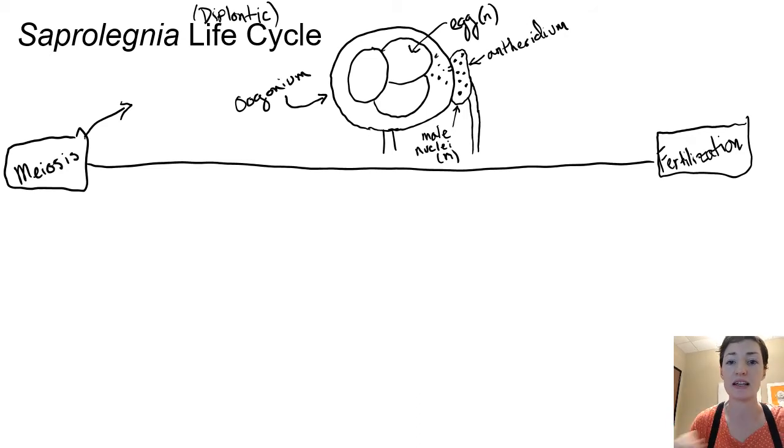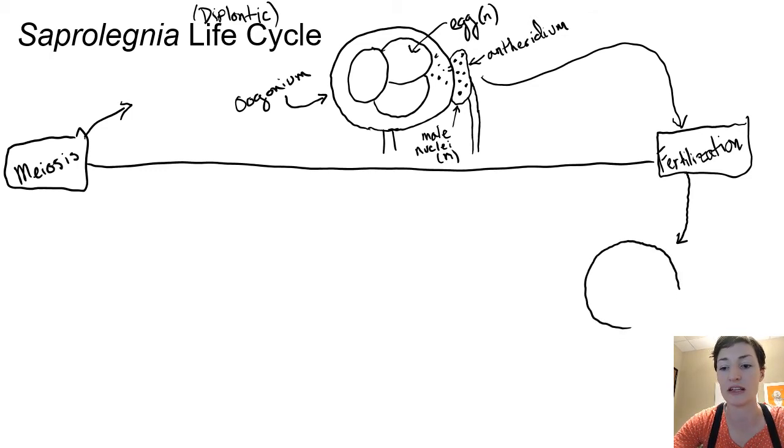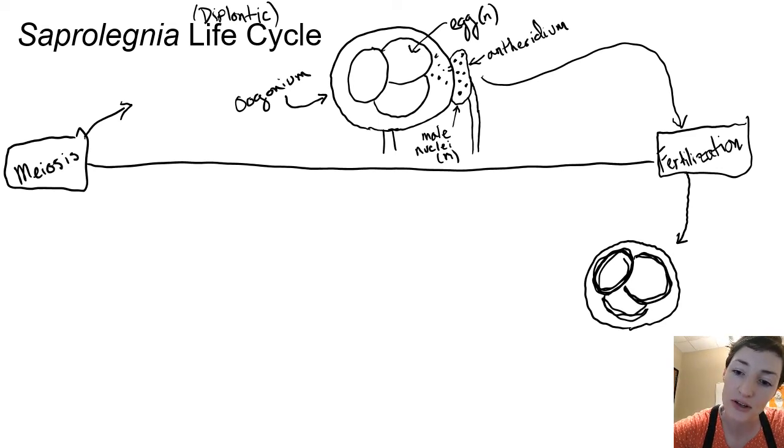So those male nuclei are going to be deposited inside of the oogonium and they're going to fuse with the egg. When those nuclei fuse with the eggs that is going to be fertilization, because we have plasmogamy when the cytoplasm of those two structures fuse together and then karyogamy when we get the nuclei fusing together. So within the oogonium fertilization happens and we get these really thick walled structures.